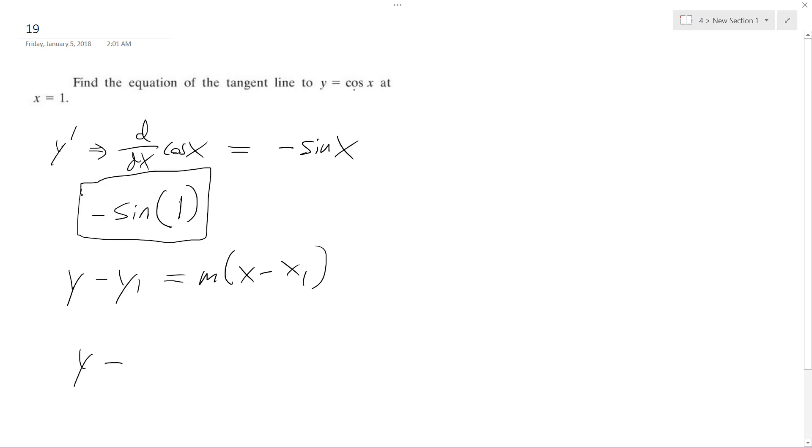So if I plug in, my y value is going to be equal to the cosine of 1 because that's from the original problem. Then what I'm going to have here is the slope is negative sine of 1. And then I'm going to have x minus 1.